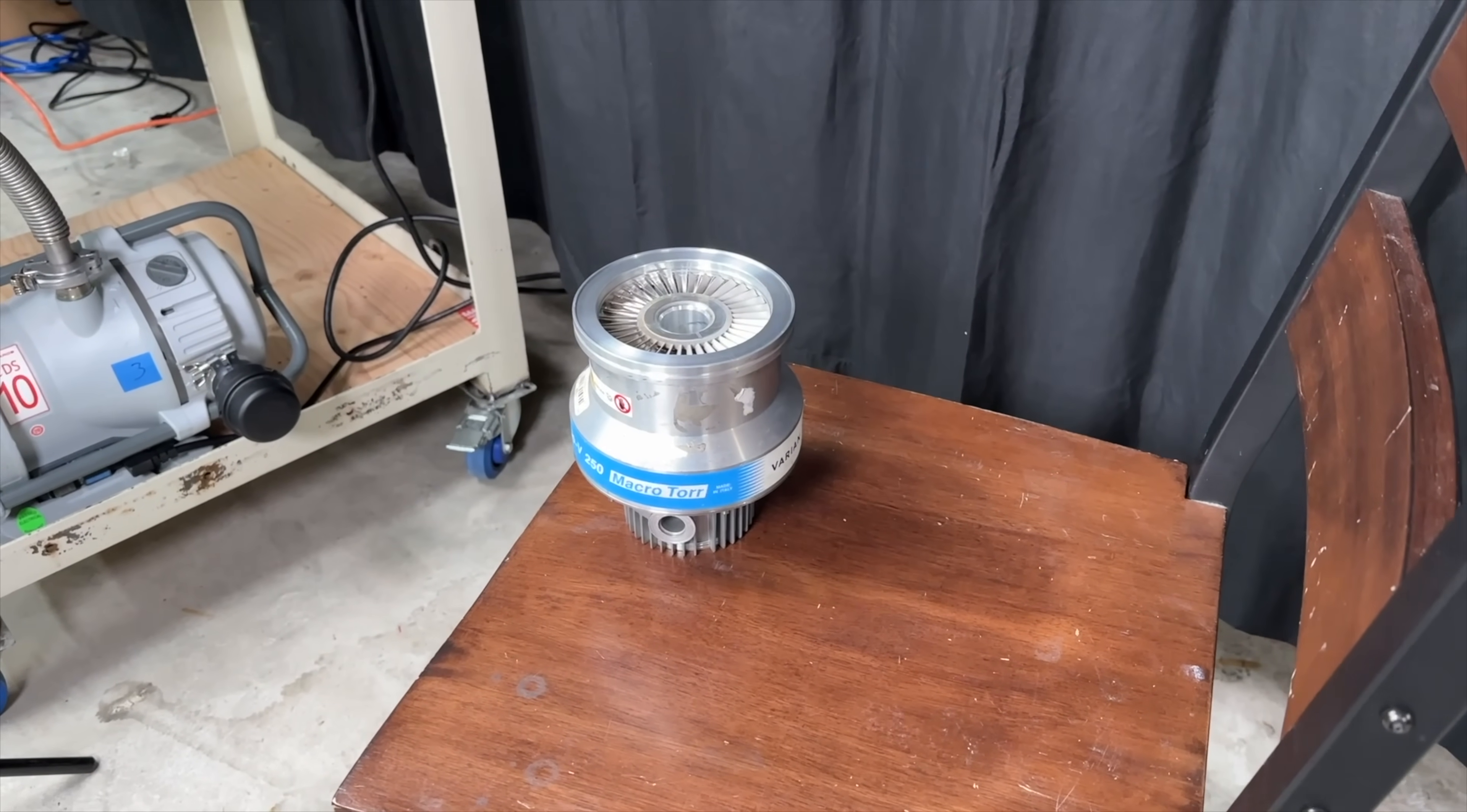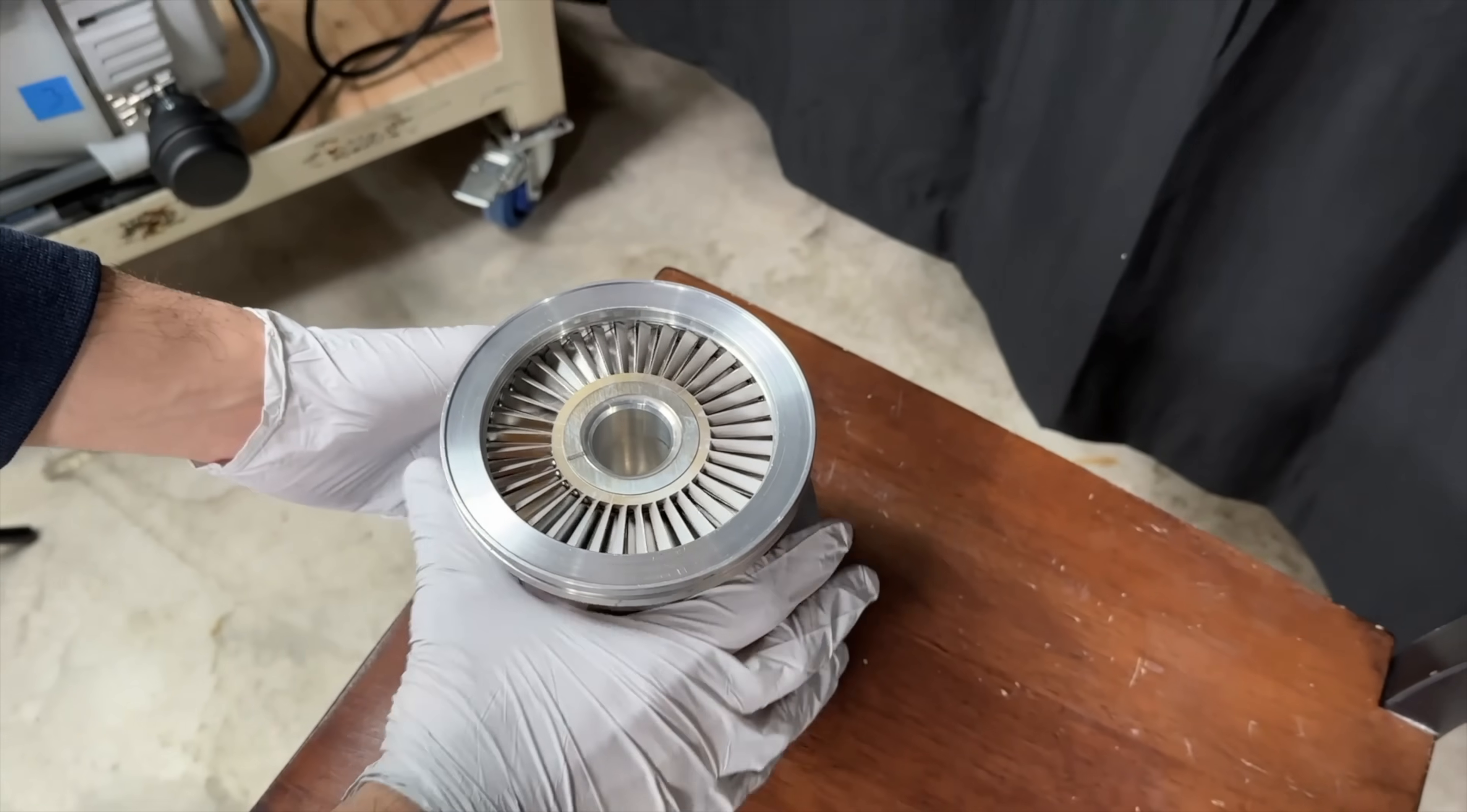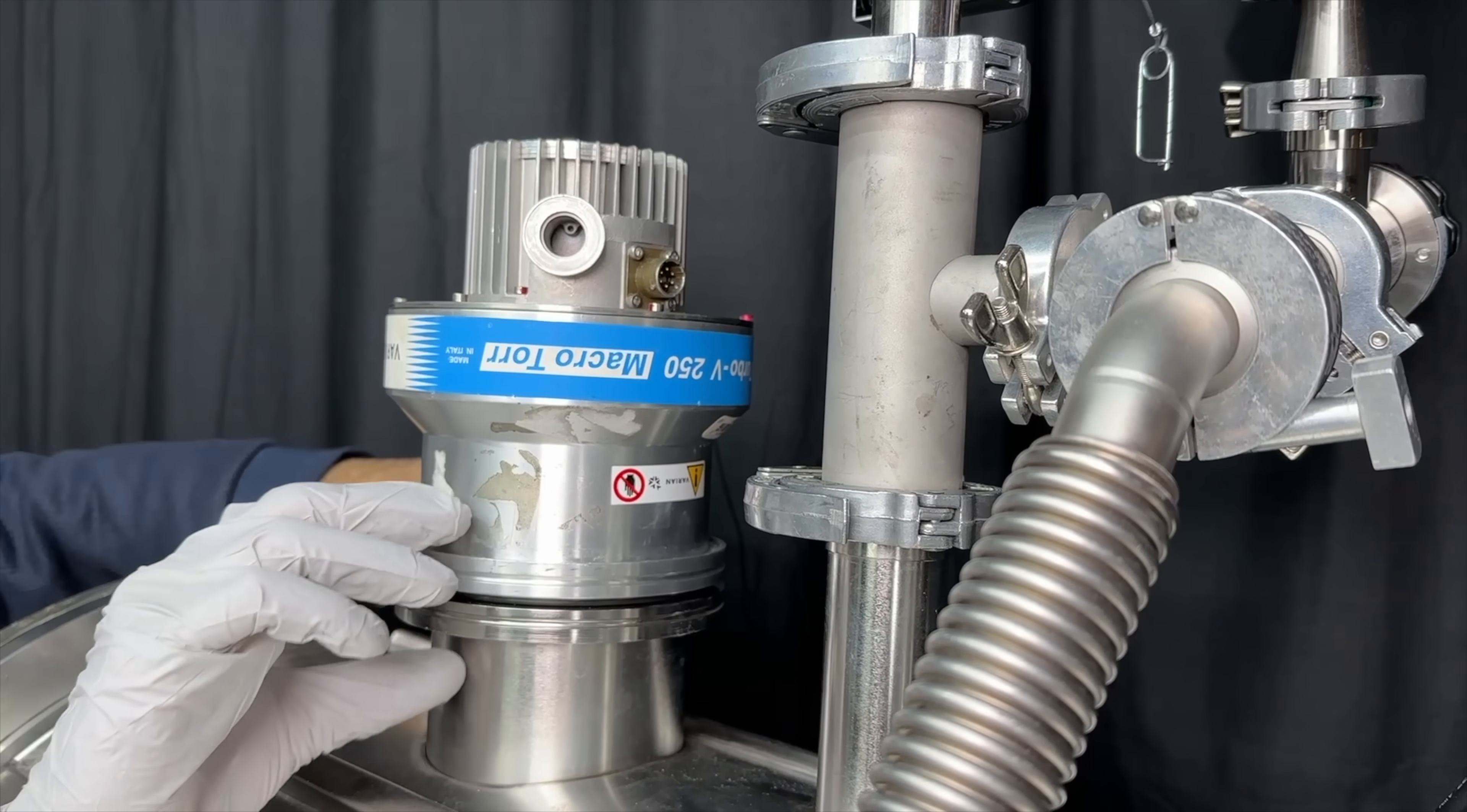To get to that, we need a second pump called a turbo molecular pump. It looks like a plane turbine and spins at 60,000 RPM. Now these are extremely expensive brand new, but the used market for them offers them for peanuts. It mounts rather easily and clamps down right here.